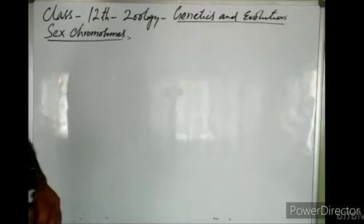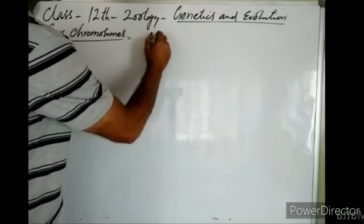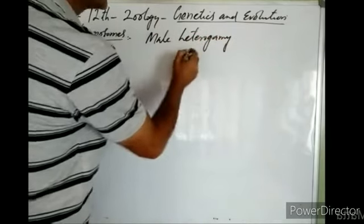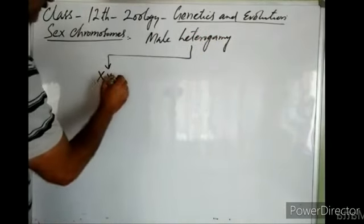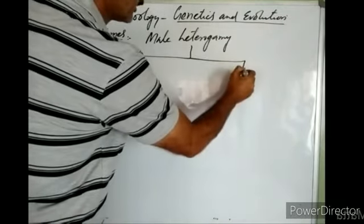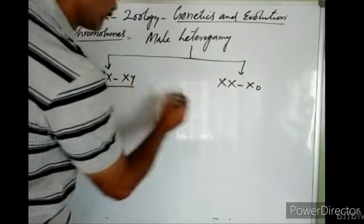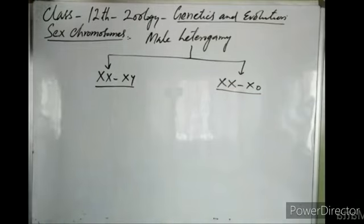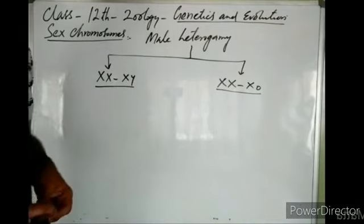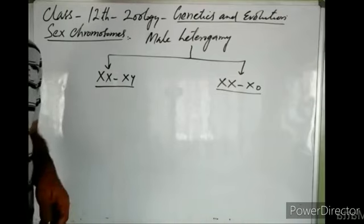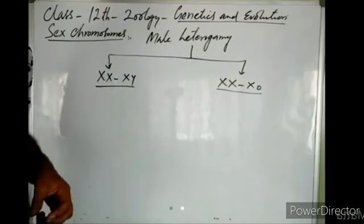We were discussing yesterday male heterogamy. In male heterogamy, there are two conditions: the XX/XY condition and the XX/X0 condition. Yesterday we discussed the XX/XY condition. This condition exists in all mammals and most insects including Drosophila, and for that purpose it is known as insect type sex chromosomes.